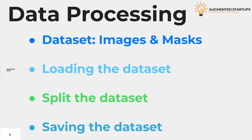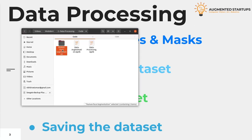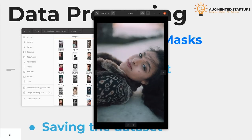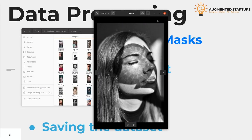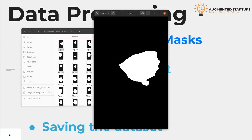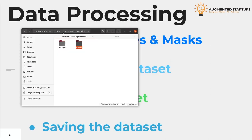We are going to discuss data processing, and here we have four steps. Our first step is the dataset itself, which should contain RGB images and their respective binary masks. Here we have our human face segmentation dataset containing two folders: the first includes images, and the second contains the masks. Each folder contains 100 images.